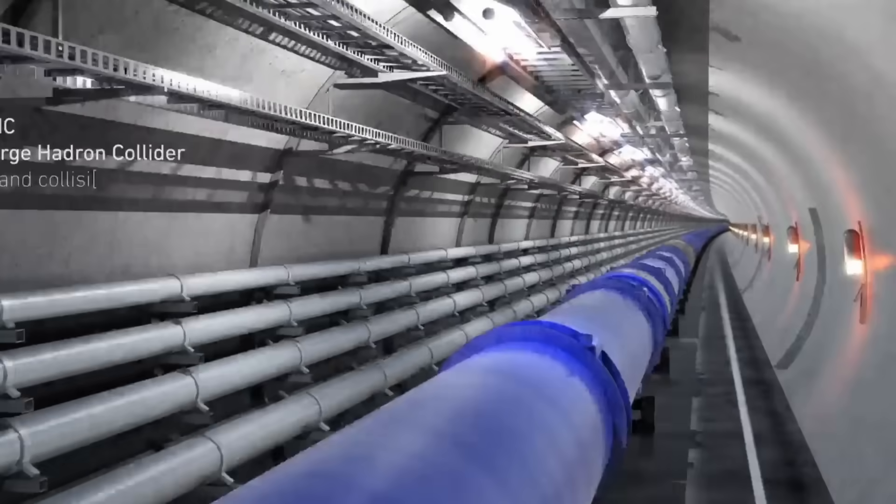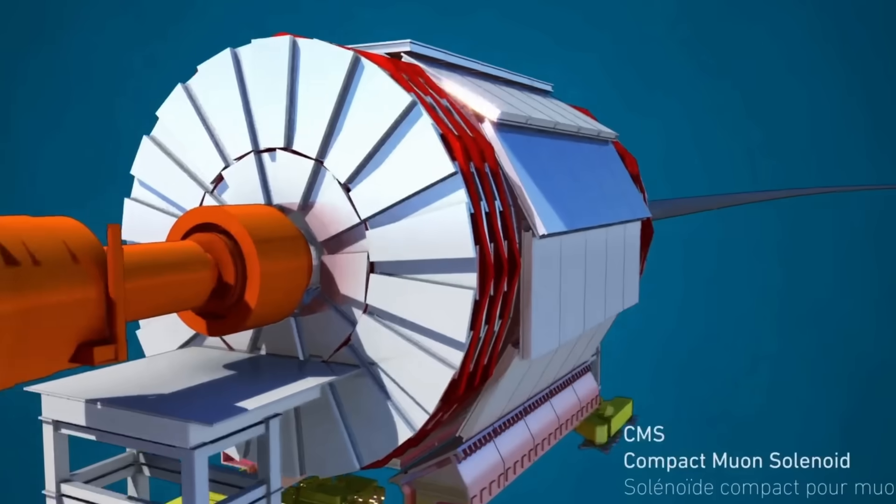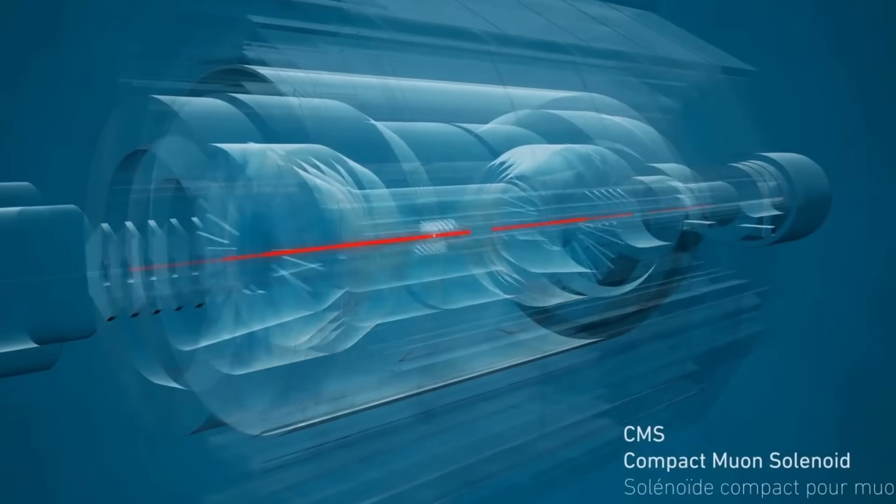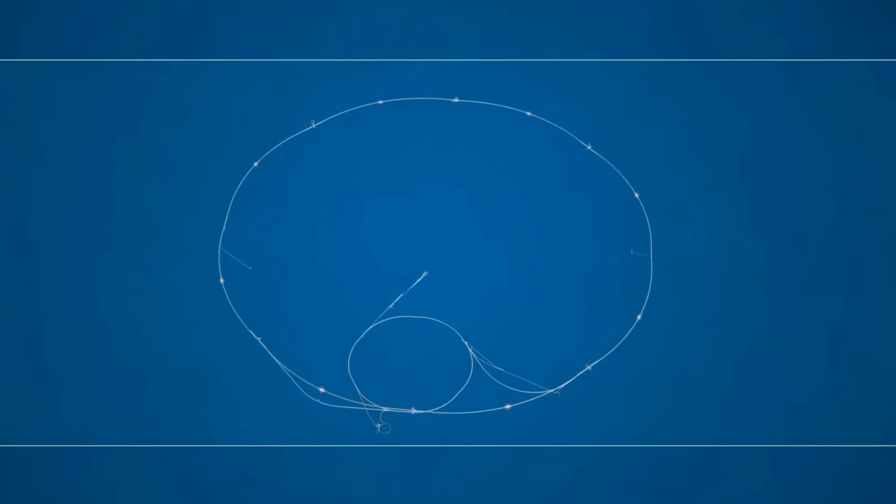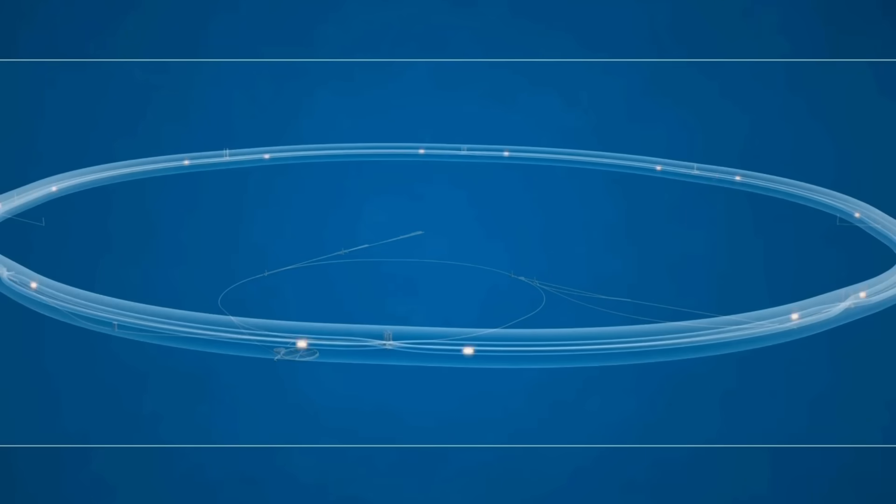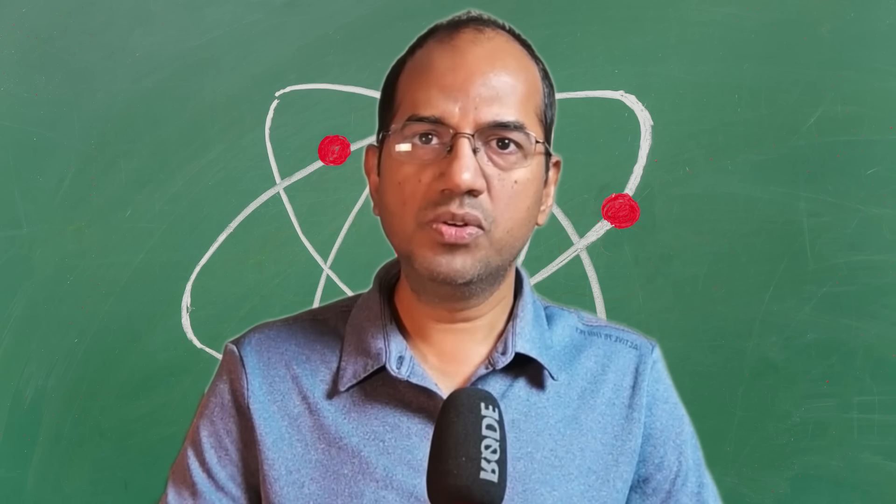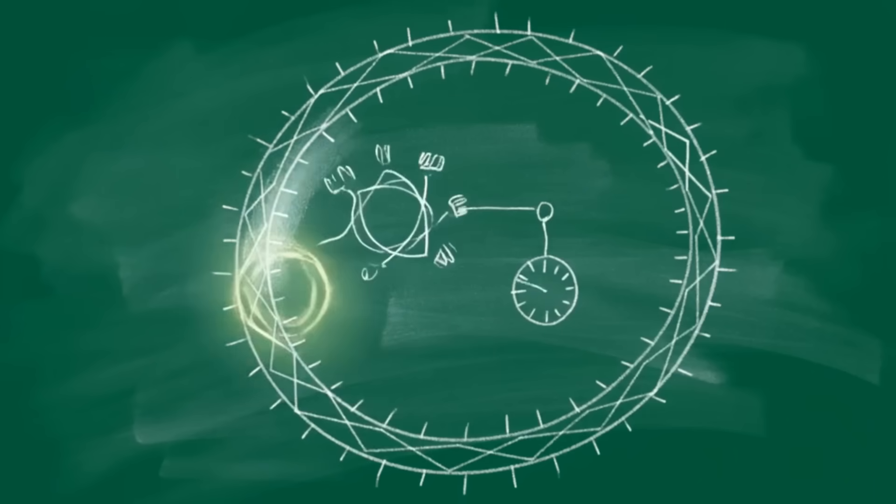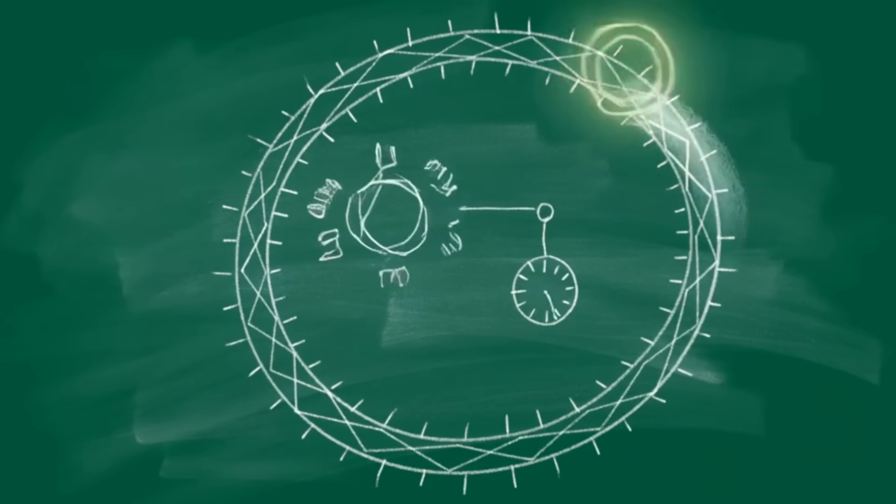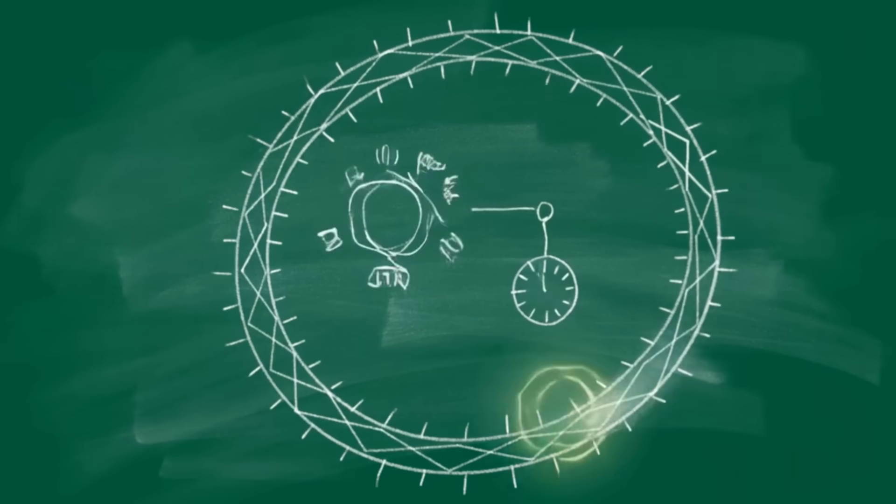We also see it in particle accelerators. Short-lived particles called muons, when sped up to near the speed of light, survive far longer than they normally should have. Because from our perspective, their internal clocks have slowed down. The faster you move through space, the slower you move through time. This effect gets more and more dramatic as you get closer to the speed of light.